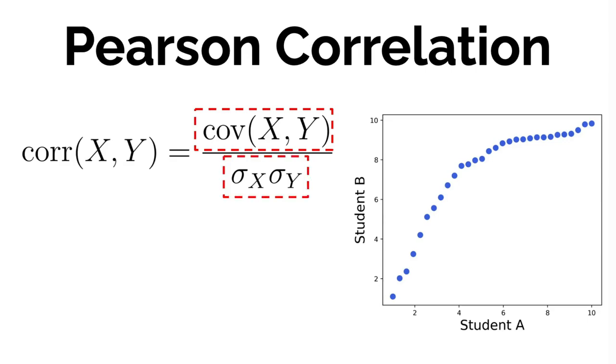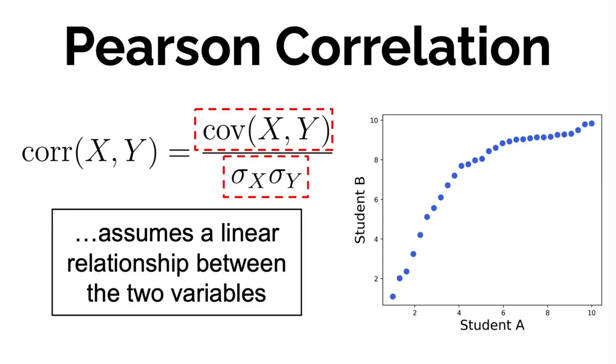and then divide the two, assuming a linear relationship between the two variables, which may not always be a good assumption. Look at how our data looks like on the right figure. It doesn't look like the relationship between those two variables is really linear.